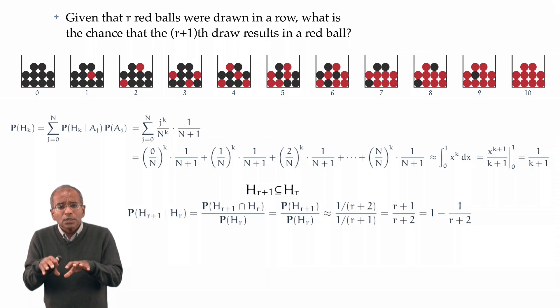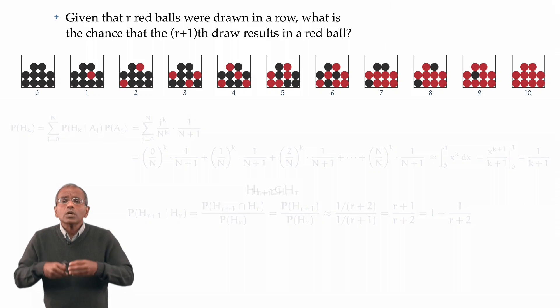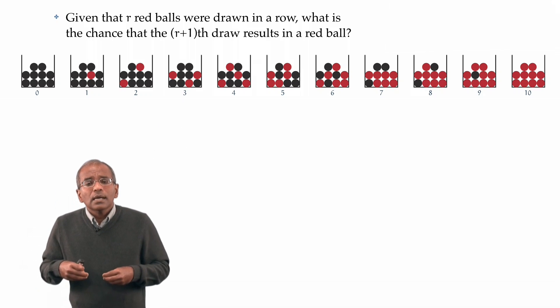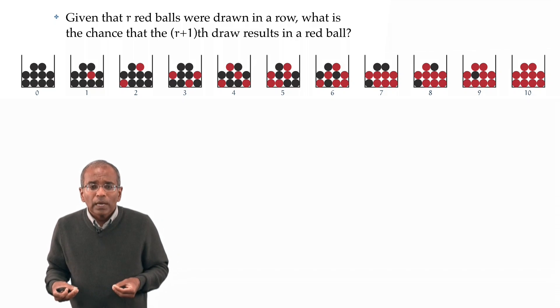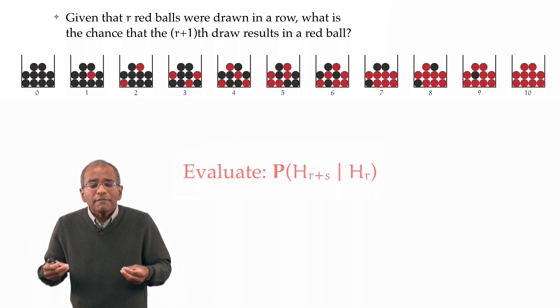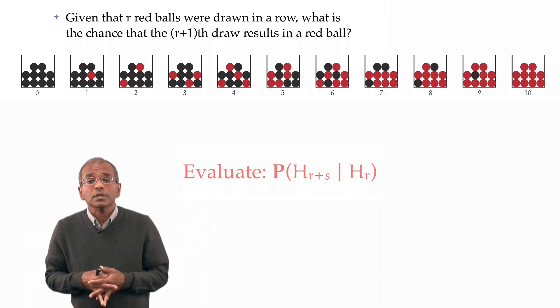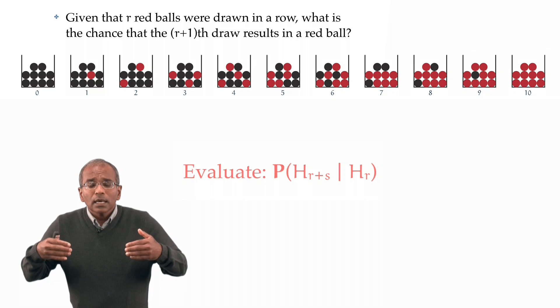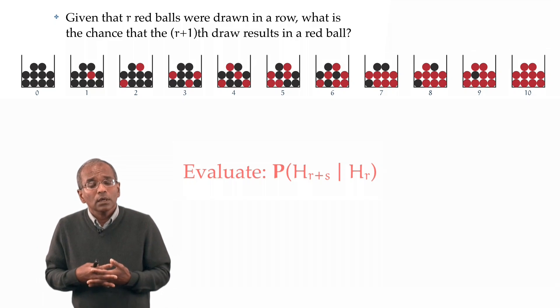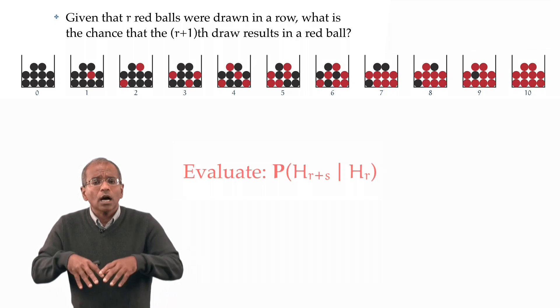Now, before we go back to Laplace, let's do a quick sanity check. And to make sure that we have the mechanism under control, let's ask the following question. What can we say about the probability that given that r red balls have been drawn in a row, the next s draws result in red balls? In other words, what is the probability of the event Hr plus s conditioned upon the occurrence of the event Hr? If we follow through exactly the same line of argument as is sketched above, we find that the probability is given by the ratio of r plus 1 to s plus r plus 1.